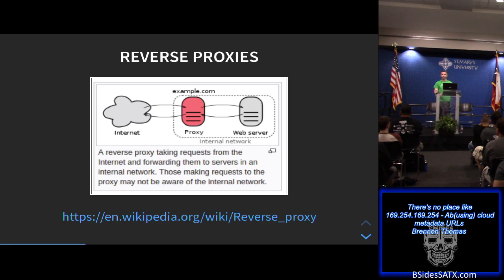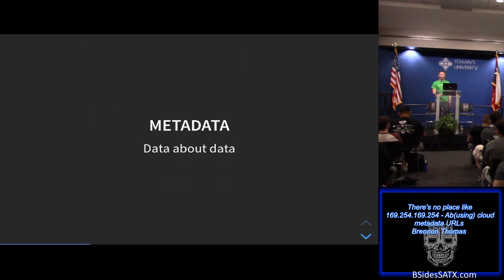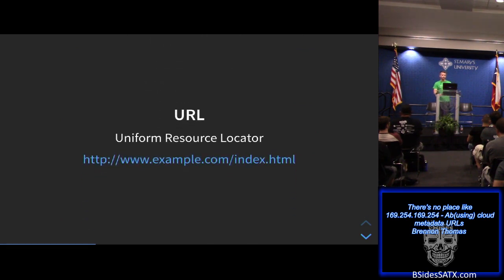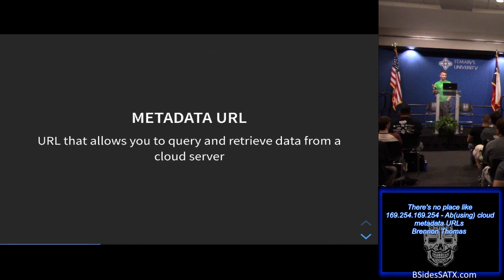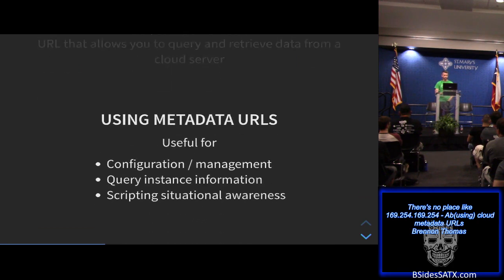To level-set on some definitions: you're probably all familiar with a traditional HTTP or web-based forward proxy — your company forces you through some appliance to prevent browsing to known bad sites. A reverse proxy is just the opposite — it's traffic coming into a corporate environment. Metadata is basically just data about data. A metadata URL is a URL that allows you to query and retrieve data from a cloud server.